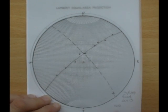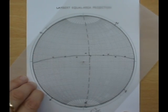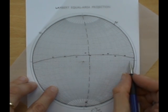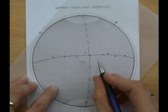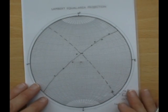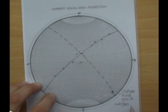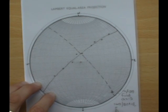And to get the dip we take this back round to north-south and count in along the equator. So 20, 30, 40, 50, 60, 70, 80 degrees. And we can see that it is dipping towards the northeast. And that's the fold axial plane.